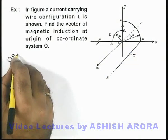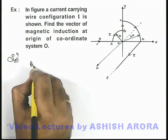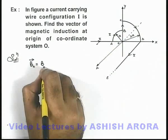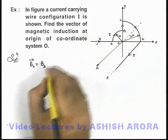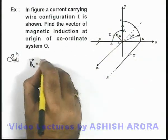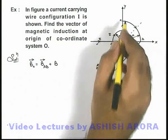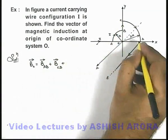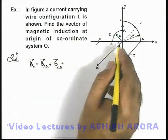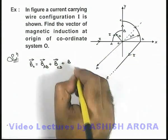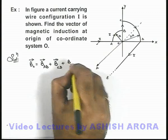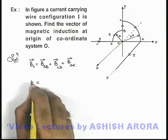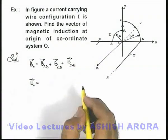So in the solution, we can write that magnetic induction at point O will be due to magnetic induction of wire section AB plus magnetic induction due to wire section CD plus magnetic induction due to an infinite wire parallel to the z-axis, which is wire section DE. If we add up all these results, we'll get the total magnetic induction at the origin.